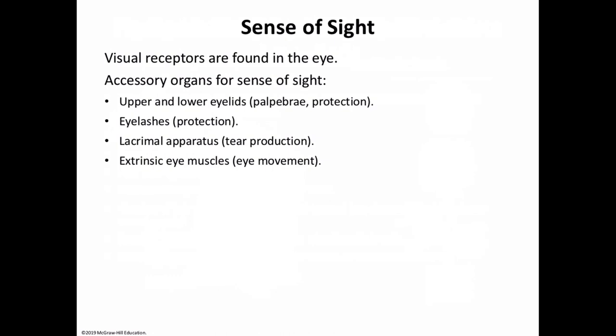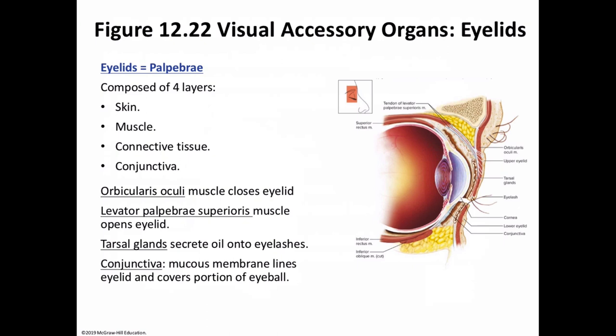The upper and lower eyelids, also known as the palpebrae, are there for protection. Eyelashes are also there for protection. The lacrimal apparatus is there for tear production. The eyelids meet at the medial and lateral angles of the eye, and the medial commissure has a fleshy elevation called the lacrimal caruncle, which is that bit of flesh right in the center, lateral to the medial commissure.